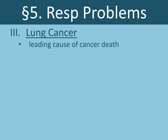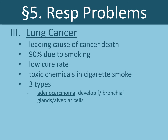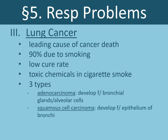Third is lung cancer, the leading cause of cancer death in North America. 90% of lung cancer cases are due to smoking, and unfortunately it has a very low cure rate. Lung cancer is caused by toxic chemicals found in cigarette smoke. There are three types: adenocarcinoma, which develops from bronchial glands or alveolar cells; squamous cell carcinoma, which develops from the epithelium of the bronchi; and small cell carcinoma, which develops from neuroendocrine cells that have the properties of both neurons and endocrine cells.